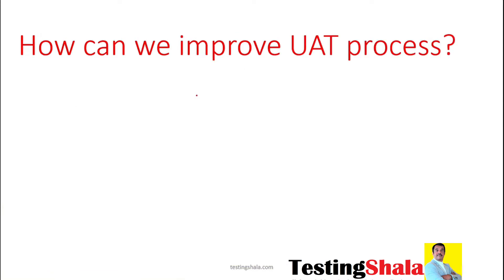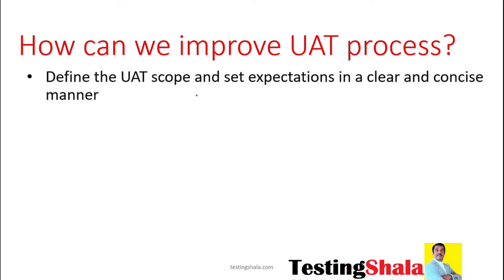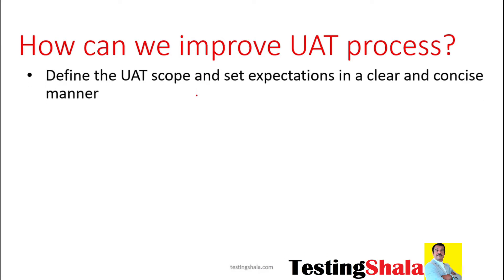How can we improve the UAT process? In order to have a right UAT process, the first thing we should do is clearly define what is the UAT scope. We should have clear expectations set in a clear and concise manner, so that all the stakeholders are on the same page.